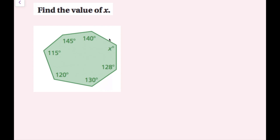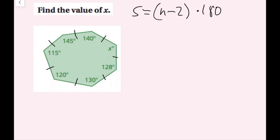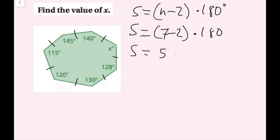We have 1, 2, 3, 4, 5, 6, 7 sides. Using the formula, the sum s of the interior angles equals (n minus 2) times 180 degrees, where n is the number of sides. So this is (7 minus 2) times 180, which is 5 times 180, and 5 times 180 is 900. So all of these angles add up to 900 degrees.